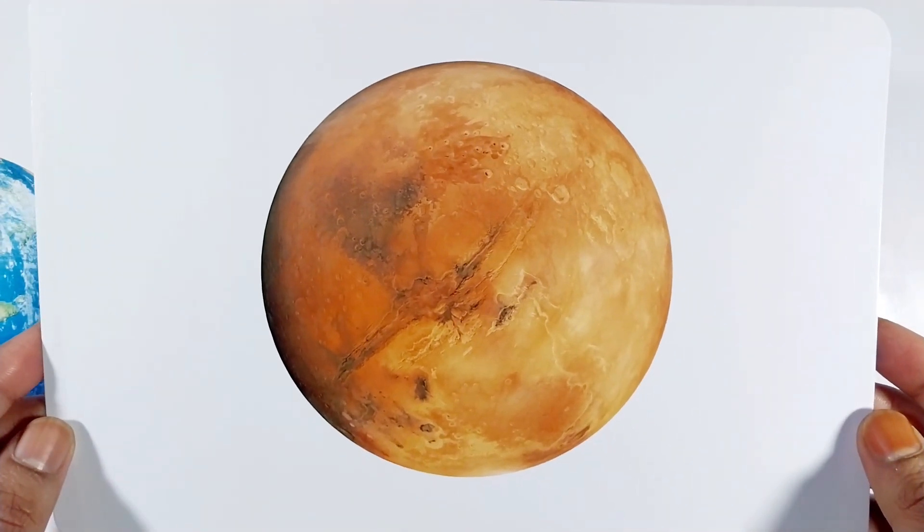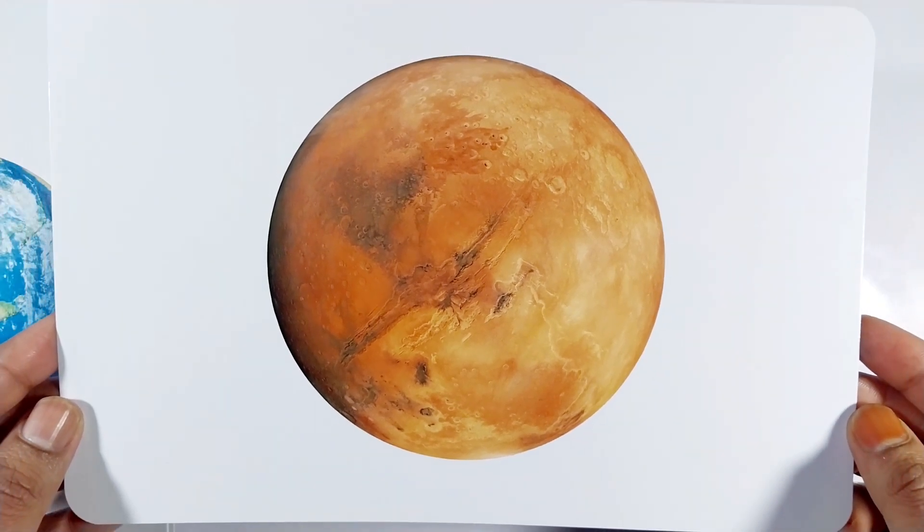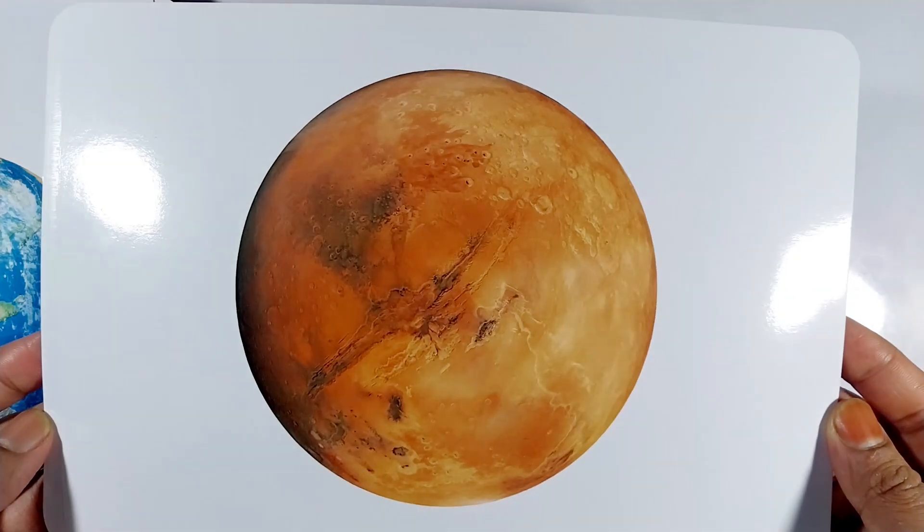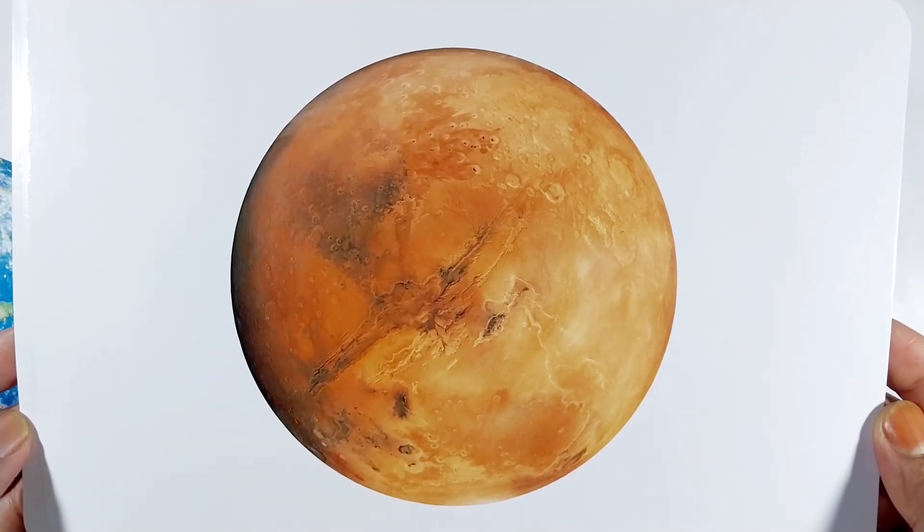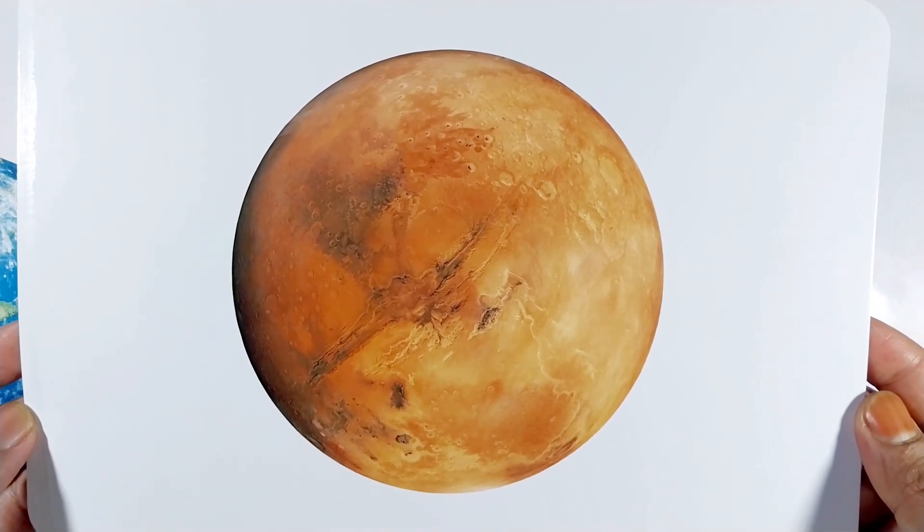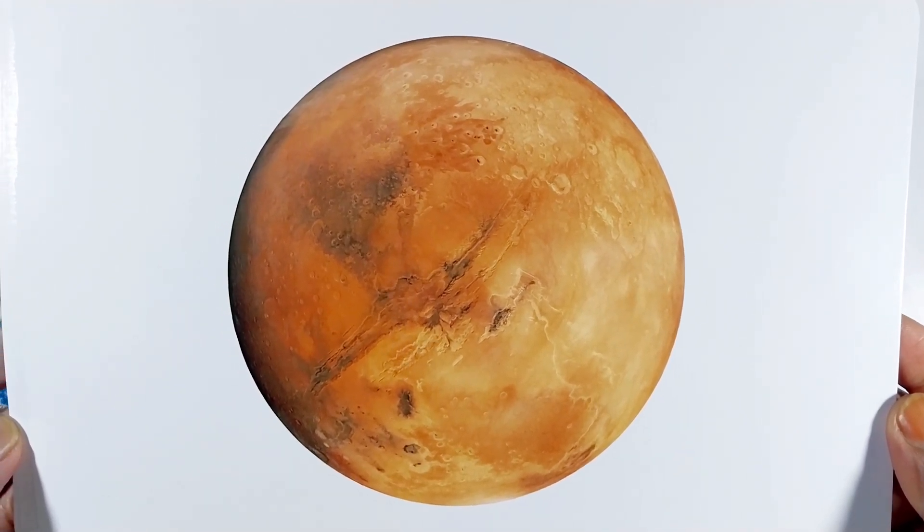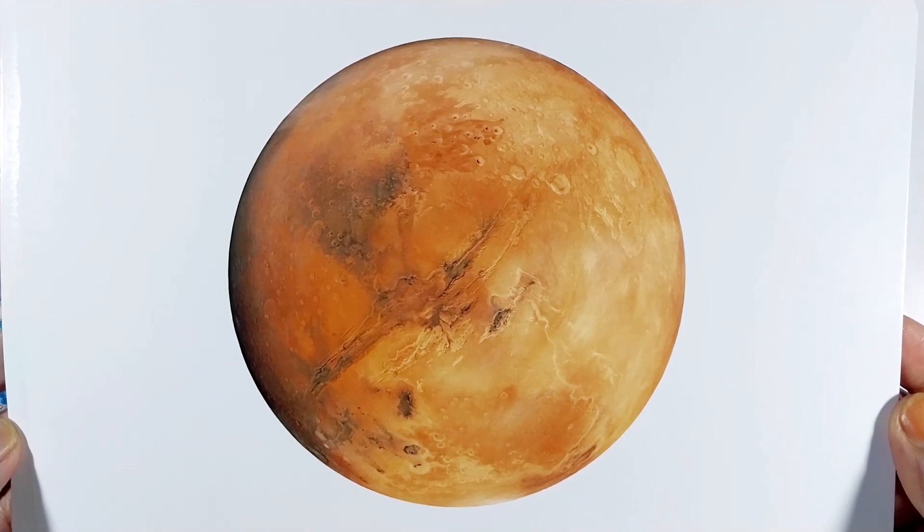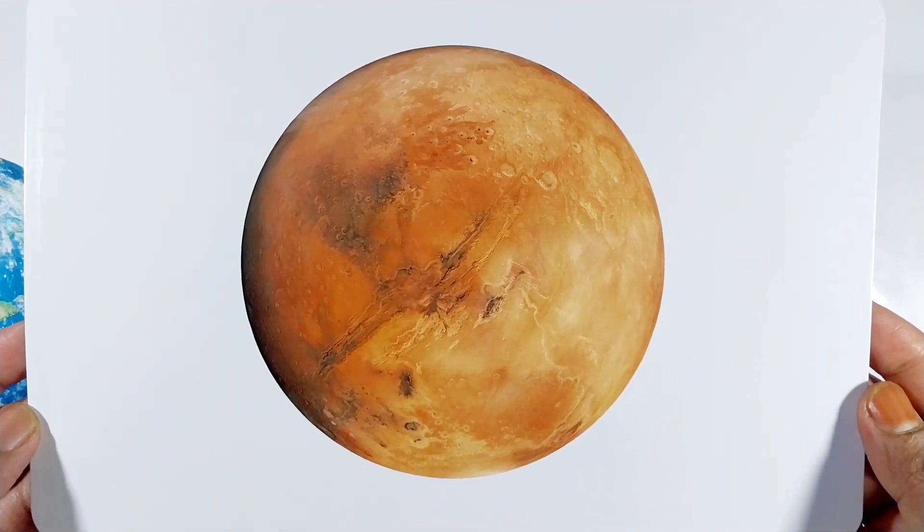Mars is the fourth planet from the sun in our solar system. It has a thin atmosphere and surface features like mountains, valleys, and large volcanoes. Scientists believe Mars may have once had rivers, lakes, and even oceans, leading to speculation about the possibility of past life on the planet.